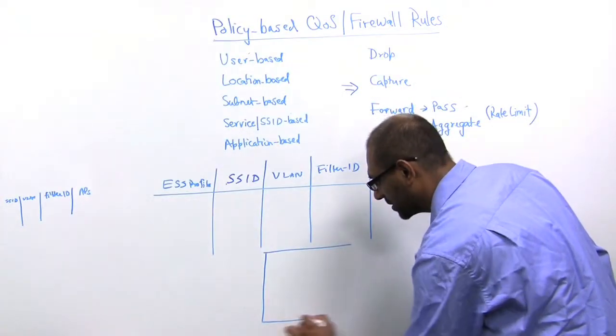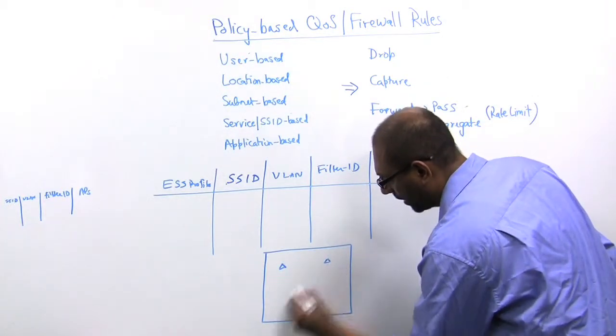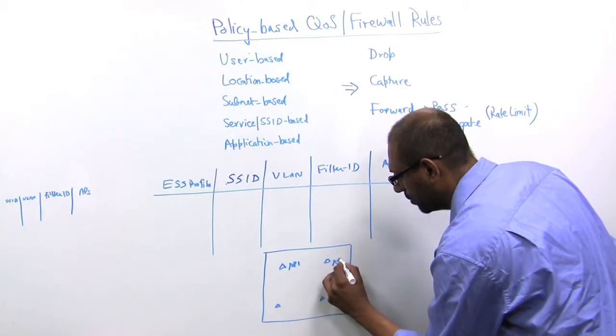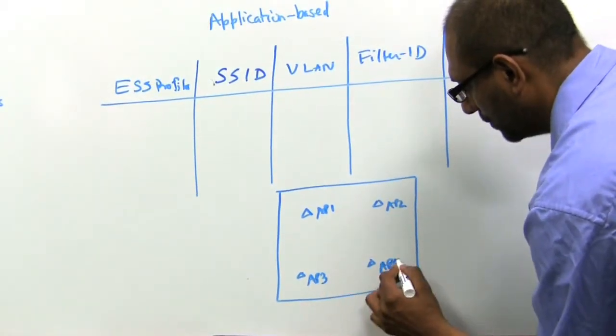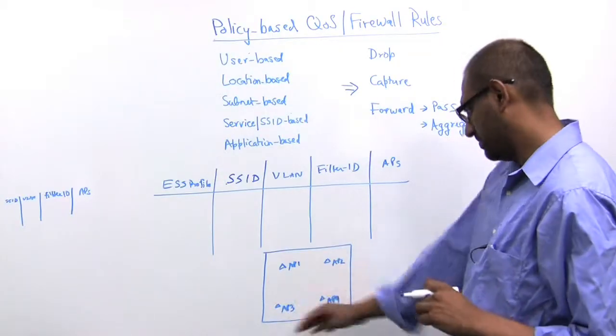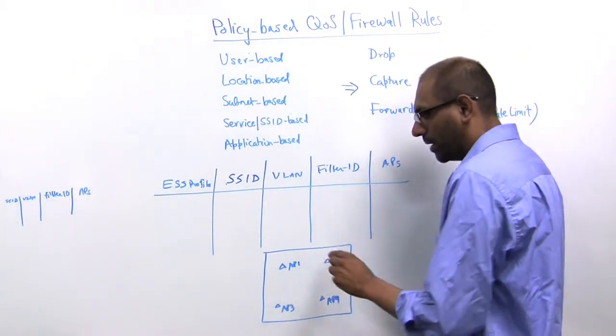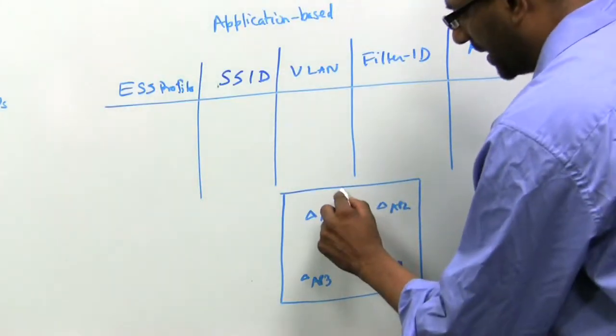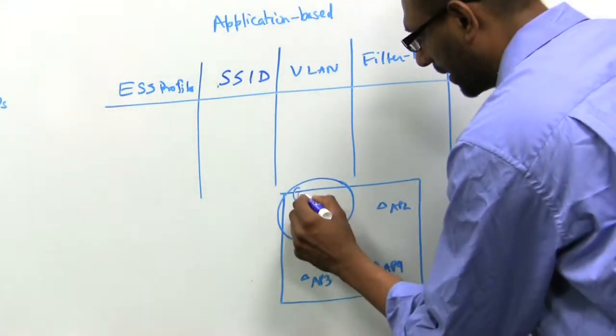So let's assume that you have a certain area being served by four access points. Let us call this AP1, AP2, AP3, and AP4. In this coverage area, you might have certain locations where you want to restrict access. So for example, let's say a guest SSID is only available in the lobby area, so you provide a guest.